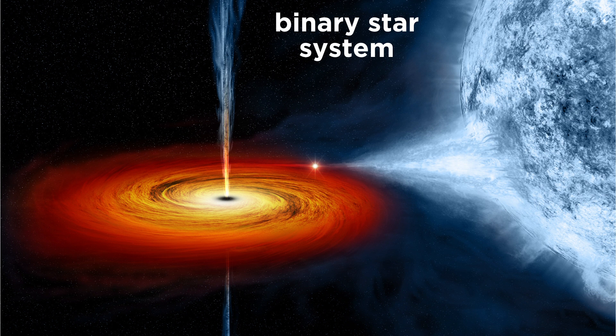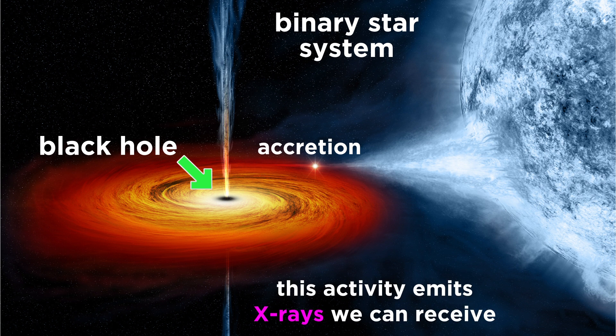Sometimes one star in a binary system becomes a black hole, and material from the other star begins accreting around what appears to be absolutely nothing. This activity emits X-rays that we can receive, which helps us identify that a black hole is there.